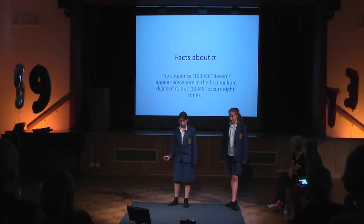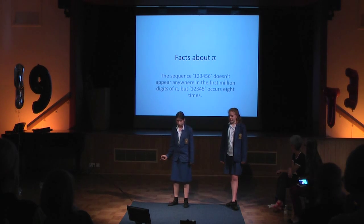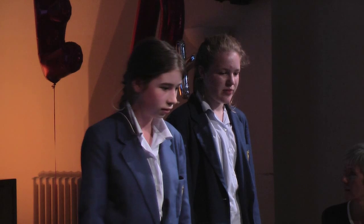The sequence 1, 2, 3, 4, 5, 6 doesn't appear anywhere in the first million digits of pi, but 1, 2, 3, 4, 5 occurs eight times in the first million digits of pi. The Greek letter pi is the 16th letter in the Greek alphabet, and pi is also the 16th letter in our modern alphabet.